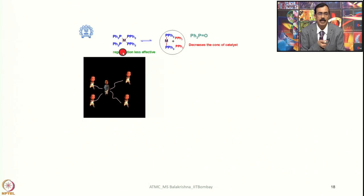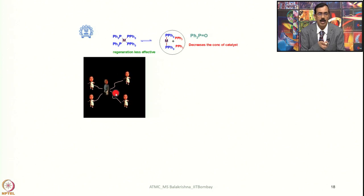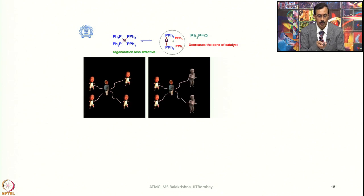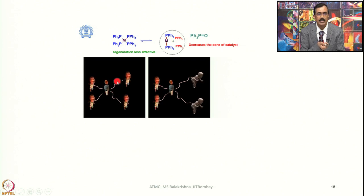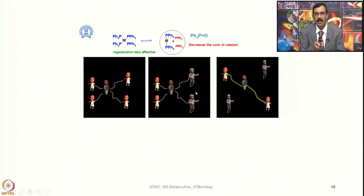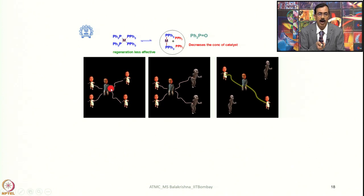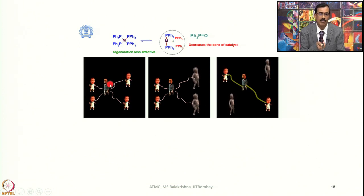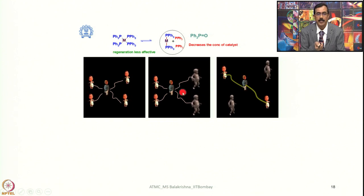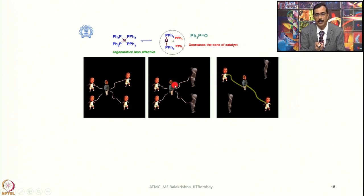Let us assume palladium tetraphenylphosphine — four ligands are there and metal is here. Now we have to activate a couple of bonds. The moment you put it into solution, two bonds would get activated; as a result, the bond distance also increases, meaning they are slightly ready for cleavage and also activated. In the next step they are completely detached. Imagine a father goes with four children to some sort of fair where millions of people are gathered.